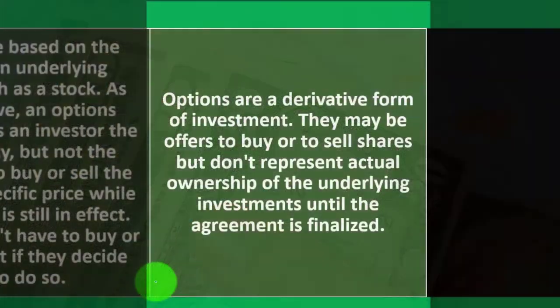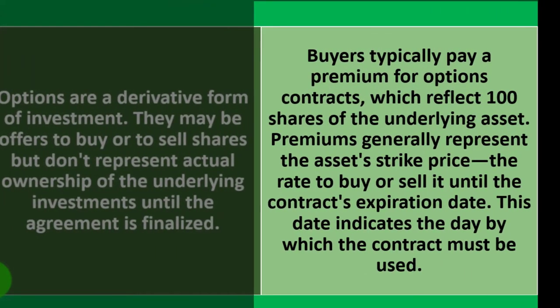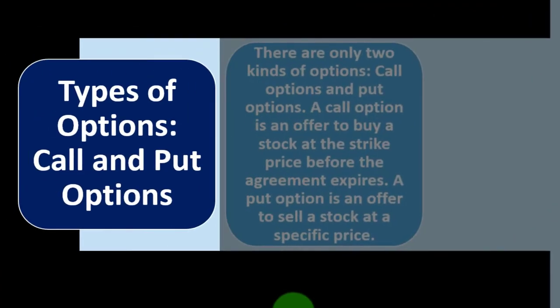Buyers typically pay a premium for options contracts, which reflect 100 shares of the underlying asset. Premiums generally represent the asset's strike price — the rate to buy or sell it — until the contract's expiration date, which indicates the day by which the contract must be used.